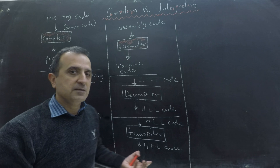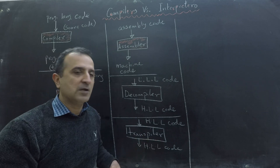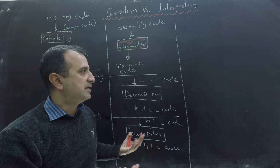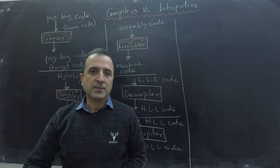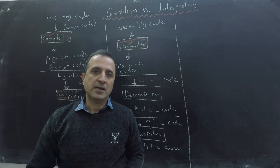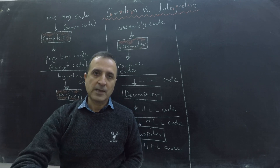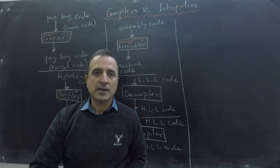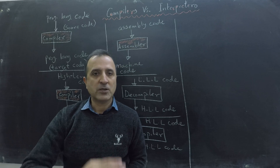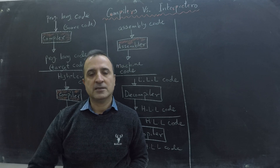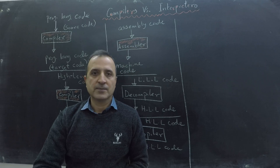Interpreters are different compared to compilers. Interpreters are not a subcategory of compilers. An interpreter sequentially takes a statement from the source code, translates that statement, and executes it. Then it takes the next statement from the source code and executes it.